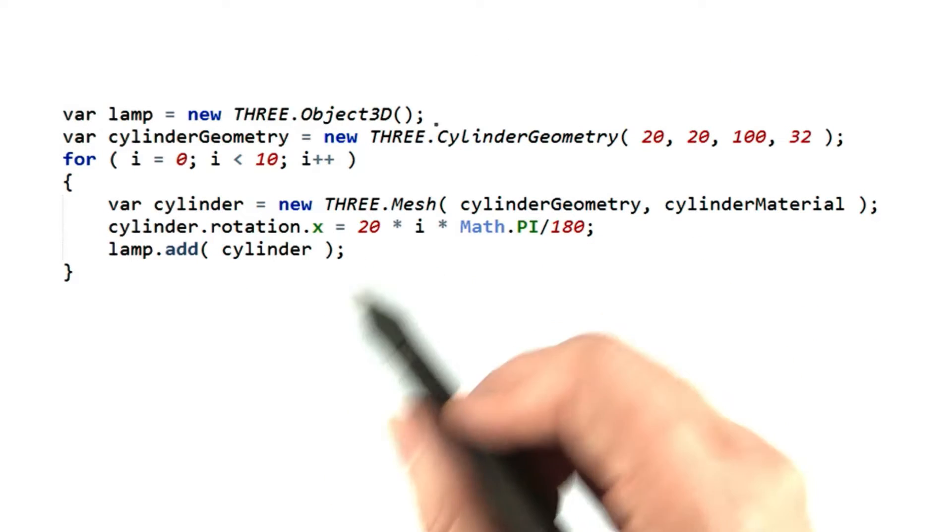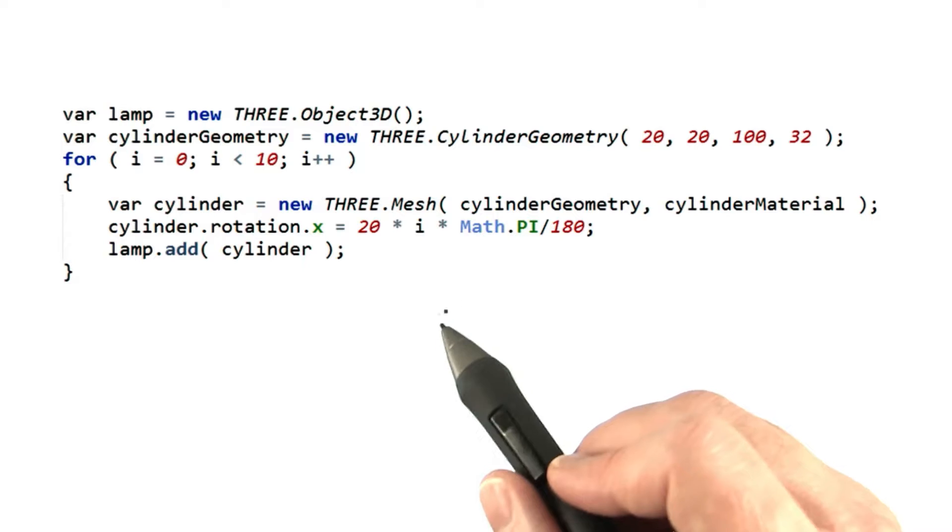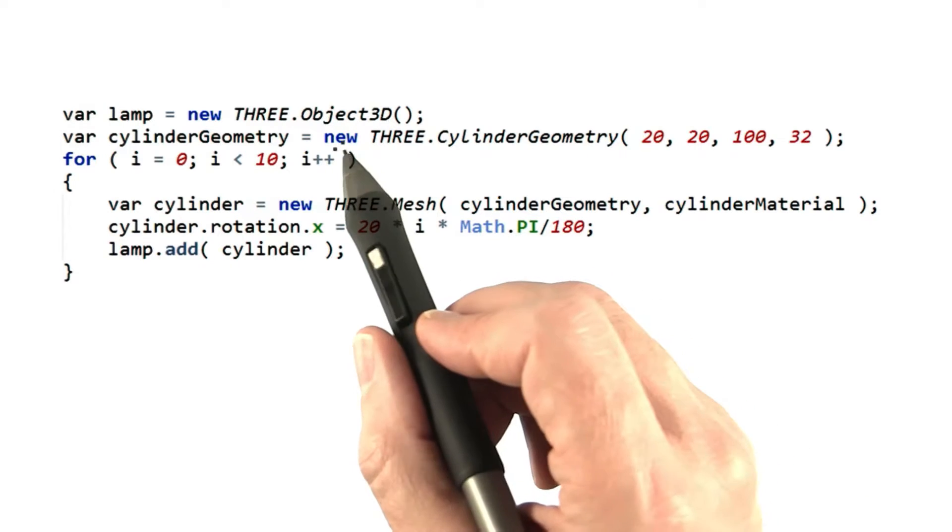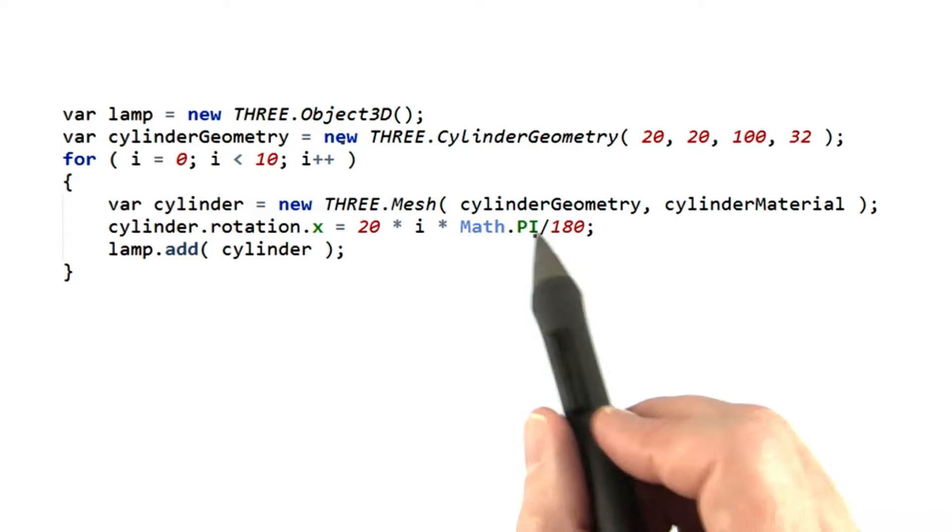This is easy enough to do in THREE.js. If the geometry doesn't change, just reuse it. Here's a simple example. I create the geometry for a cylinder and then reuse it again and again for each mesh object that I make.